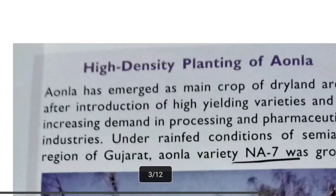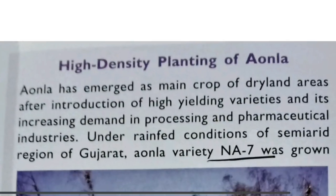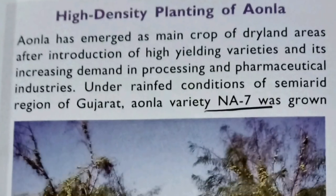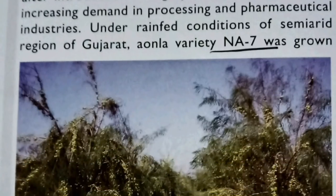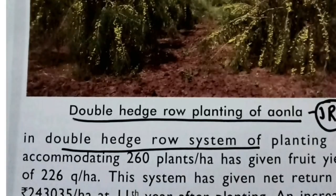Moving to high density planting in Amla: the variety Na7, also known as Neelum, is chiefly a pollinizer variety and is considered suitable for high density planting. In the case of planting in Amla, the double hedge row system of planting is recommended.